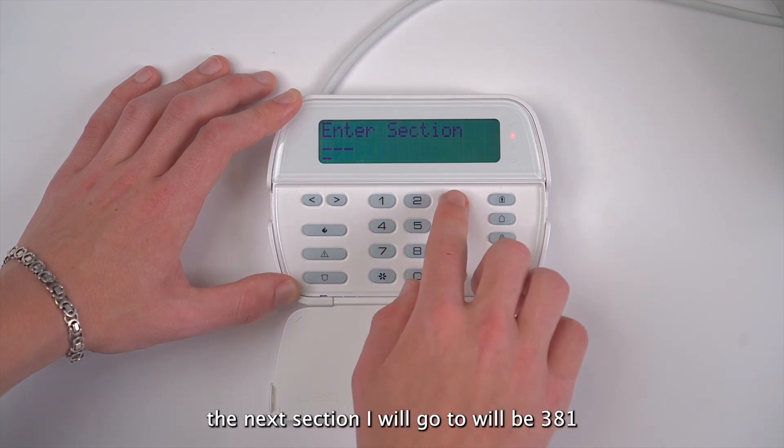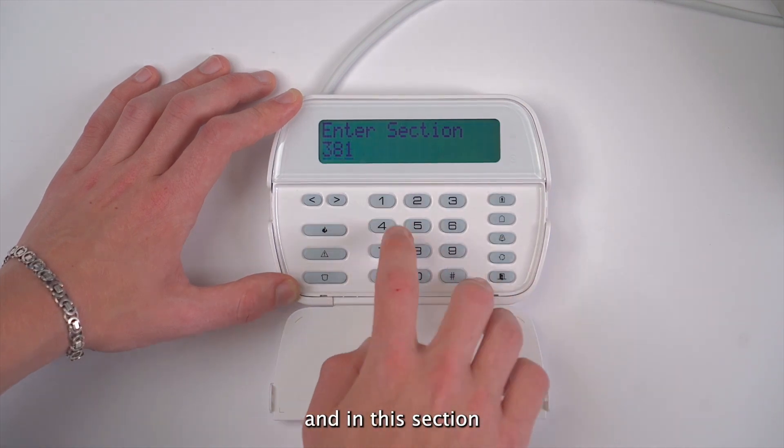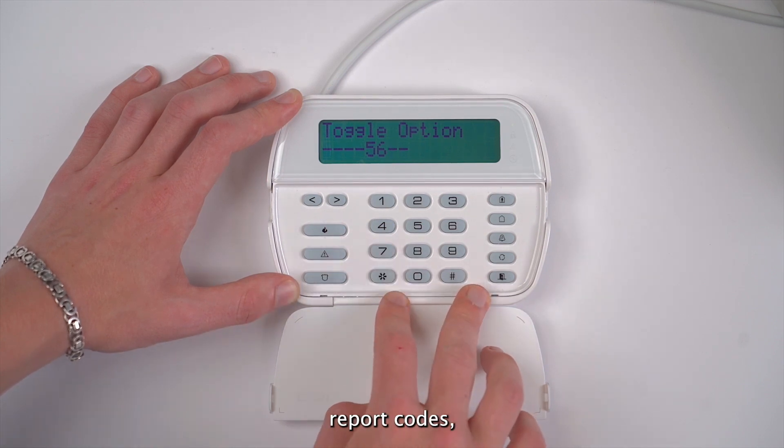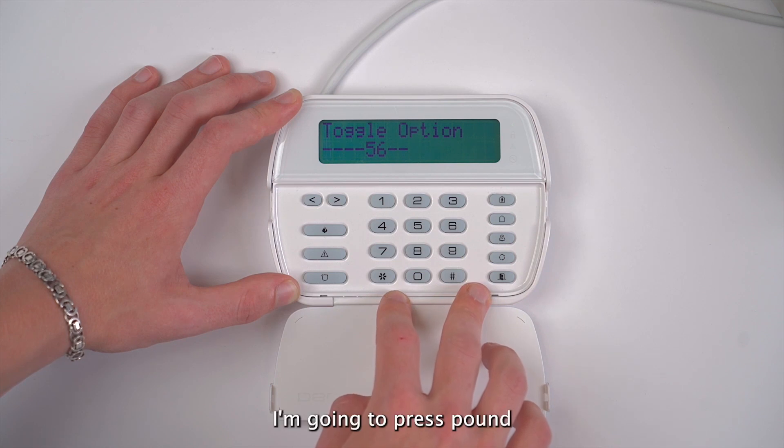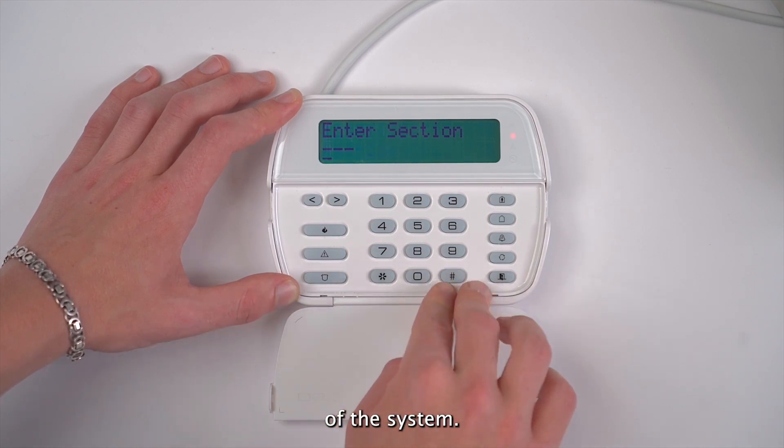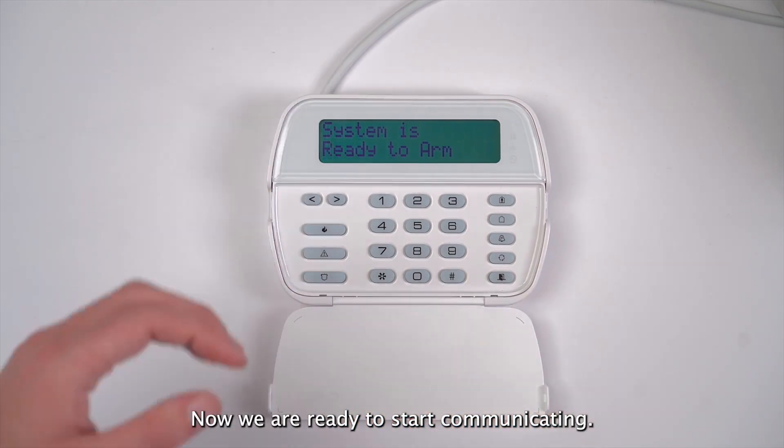The next section I will go to will be 381, and in this section, I will need to disable option 7 if I want to receive the automatic contact ID report codes. I am going to press pound and then I am going out of the programming mode of the system. Now we are ready to start communicating.